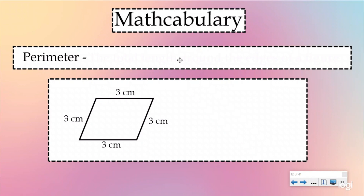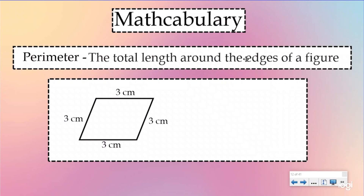We're going to quickly go over our math vocabulary, just in case you weren't with us last lesson, so we have a common understanding of what we mean when we say perimeter. The perimeter is the total length around the edges of a figure. If I want to find the perimeter of this rhombus, all I need to do is find the length of each edge or side and then add them up. When I'm doing perimeter, I'm adding the sides or the edges.